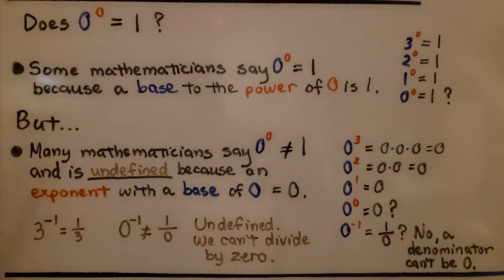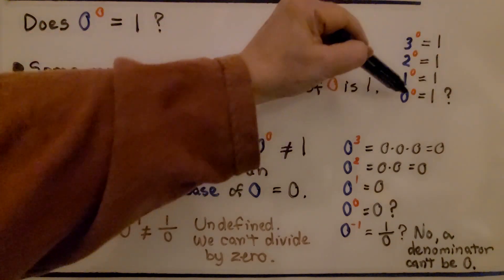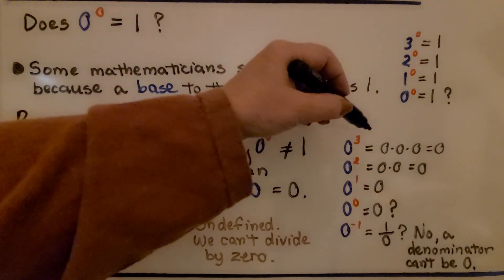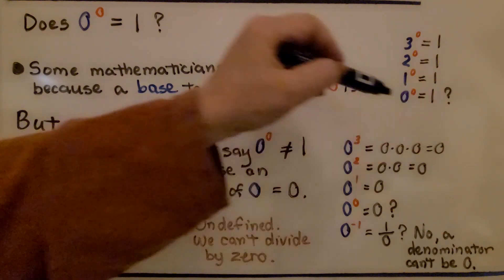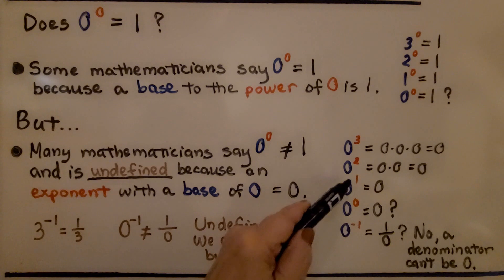Let's take this a little further. Does 0 to the 0 power equal 1? Well, all through this lesson we saw that a number to the 0 power is equal to 1. Some mathematicians say 0 to the 0 power is equal to 1, because a base to the power of 0 is 1. 3 to the 0 power is 1, 2 to the 0 power is 1, 1 to the 0 power is 1 — so they say 0 to the 0 power is 1. But many mathematicians say 0 to the 0 power is not equal to 1 and is undefined, because an exponent with a base of 0 is equal to 0. 0 to the 3rd power means 0 times 0 times 0, which equals 0. 0 to the 2nd power is 0 times 0, that's 0. And 0 to the 1st power is just 0.